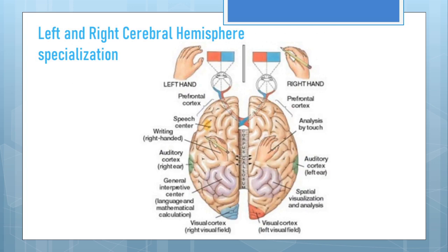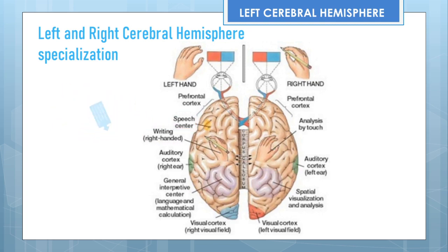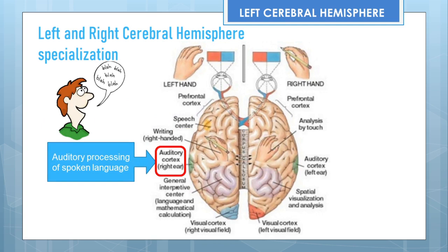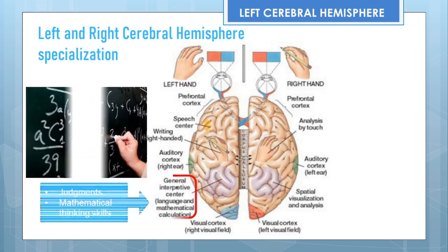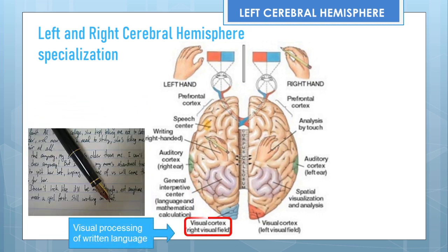Now let us see what are the functional specializations of the two hemispheres. First, the left cerebral hemisphere: language-related motor functions such as speech, reading, and writing are the functional specializations of the left cerebral hemisphere. There is a speech center and a writing center in the left hemisphere. Likewise, auditory processing of spoken language is also the function of the left hemisphere. When speaking, the spoken language is processed in the auditory cortex of the left cerebral hemisphere. The left cerebral hemisphere is also concerned with judgments and mathematical calculation, and visual processing of written language.